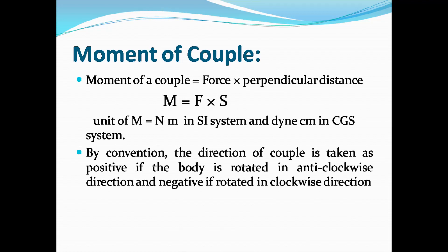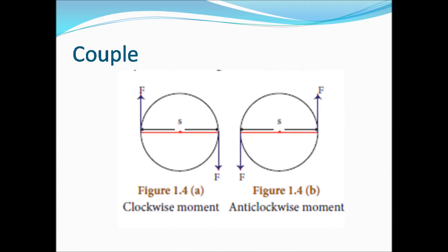By convention, the direction of a couple is taken as positive if the body rotates anti-clockwise, and negative if it rotates clockwise. Figure 1.4a represents a clockwise moment and Figure 1.4b represents an anti-clockwise moment.